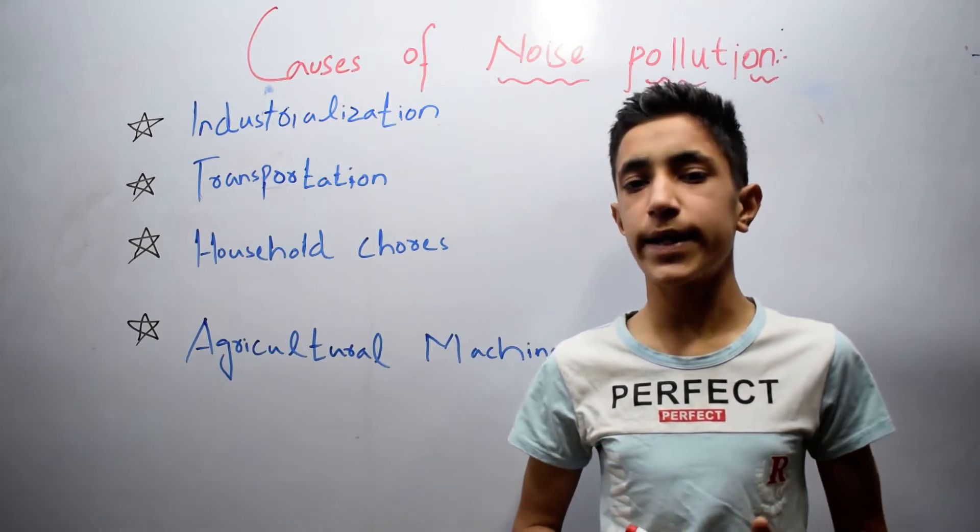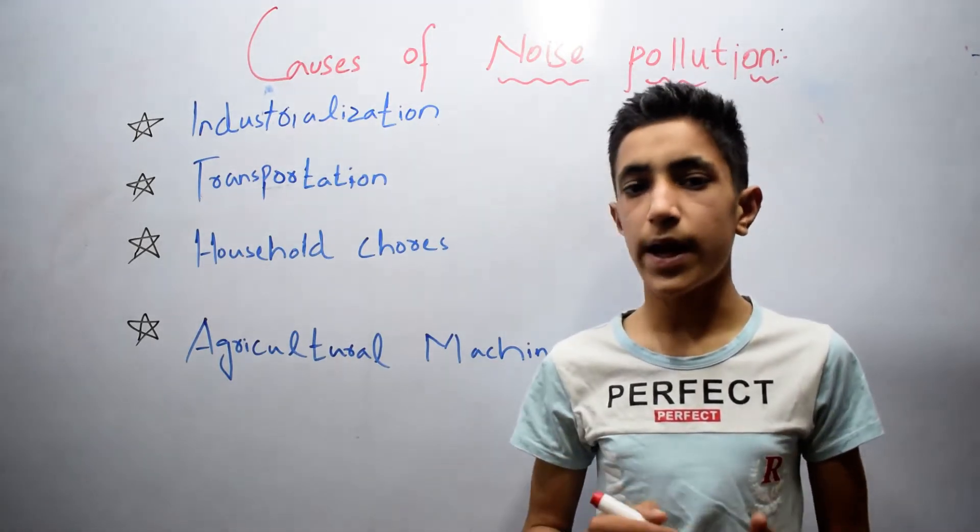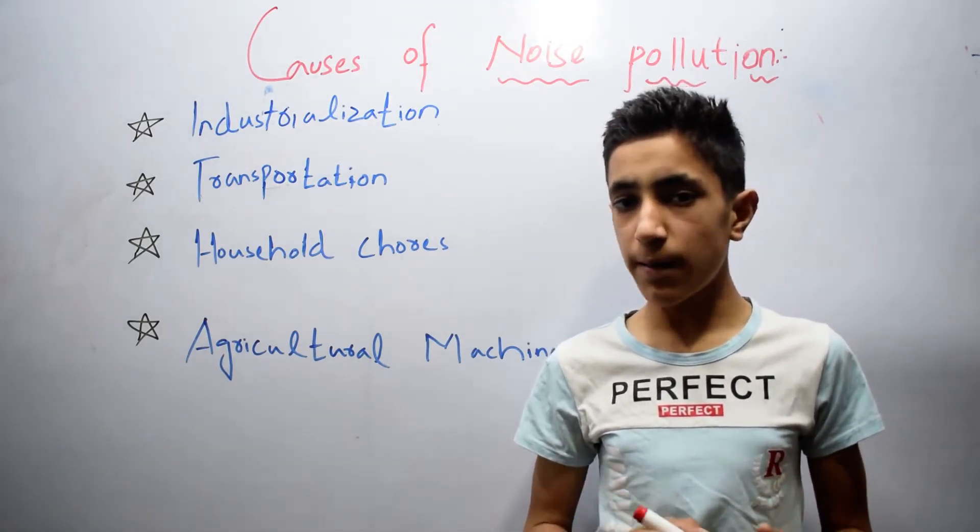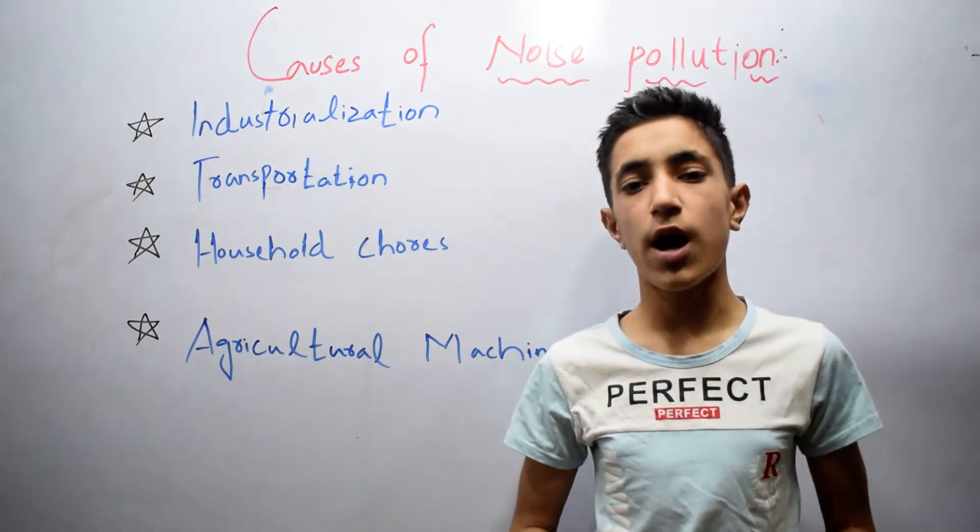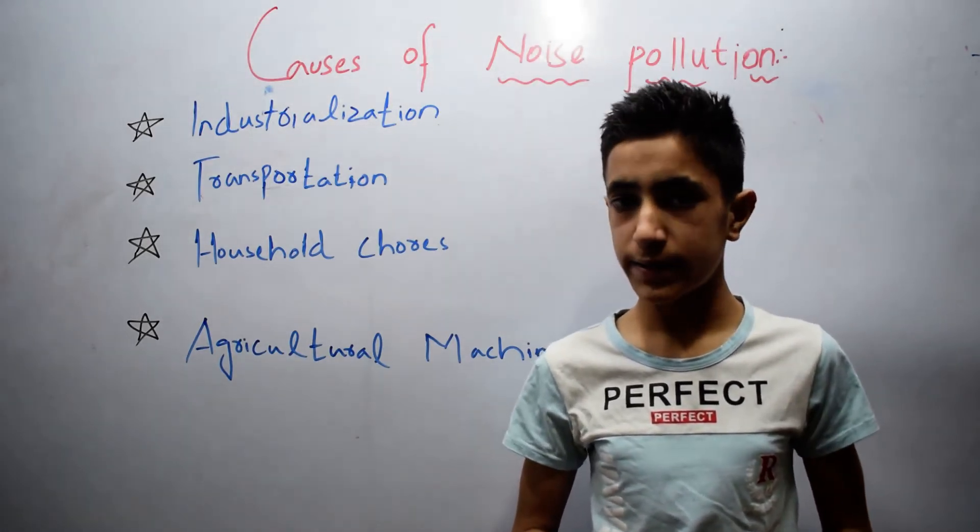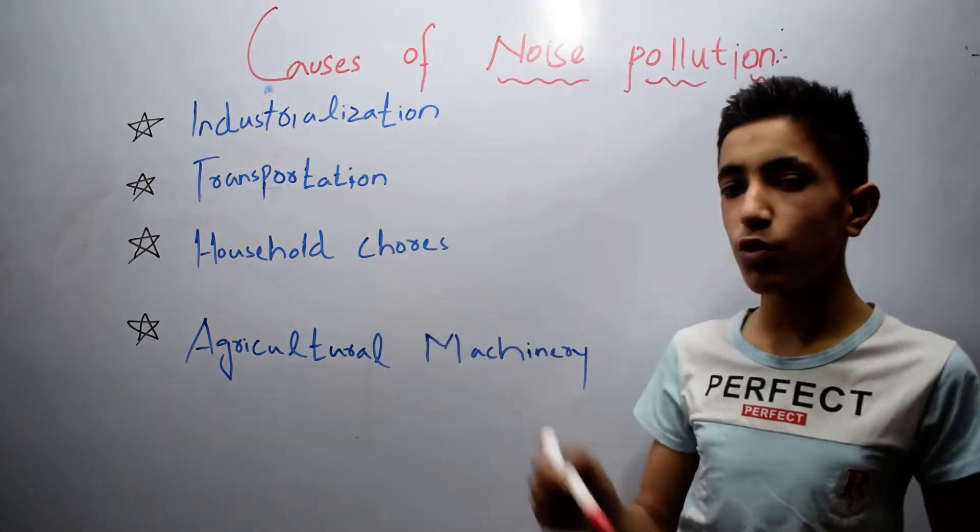Any unwanted and high level of sound that disturbs the environment is called noise pollution. For example, sound of traffic, sound of airplane. It disturbs the environment, so it is called noise pollution.